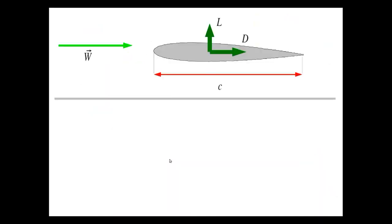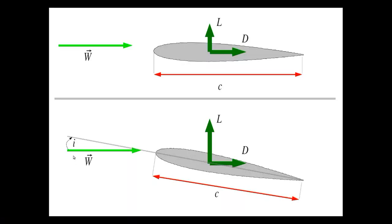Looking at how wind tunnel data is obtained gives insight into why people have difficulty understanding the sign convention here. If you have a velocity w coming from left to right onto an aerofoil, you expect lift and drag to be produced. An aerofoil has a leading edge and a trailing edge, and the distance between those is known as the chord. If you tilt the aerofoil from the incoming flow, you end up with an incidence angle — defined as the angle between the incoming flow and the line between the leading edge and the trailing edge of the aerofoil.